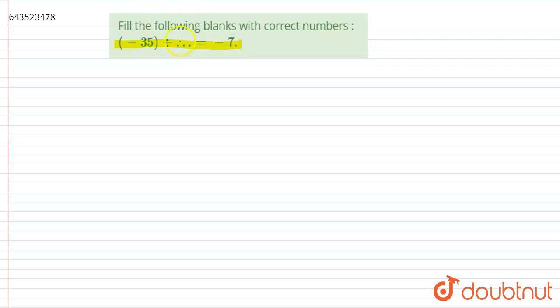So in this problem, we need to find out the blank space. Minus 35 divided by that number is equal to minus 7. So we will write the blank space as x.